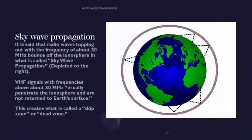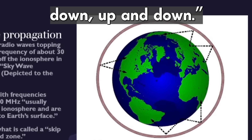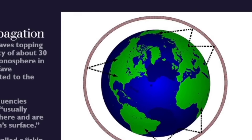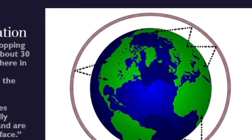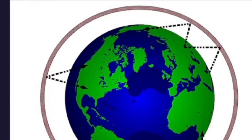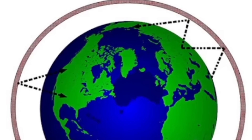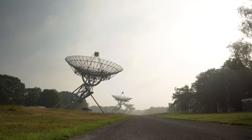This is where sky wave propagation comes in. On a globe, a horizontal signal would go toward space as the earth drops away; they claim it goes up, hits the ionosphere, bounces back down, reflects off the ground, goes back up, bounces down again, repeatedly. Radio waves topping out at around 30 MHz bounce off the ionosphere in what's called sky wave propagation. Very high frequency signals above about 30 MHz 'usually penetrate the ionosphere and are not returned to earth's surface.' This creates a skip zone or dead zone where signals can't be received. The ionosphere supposedly tops out at 40 MHz — if your signal is 40 MHz or below it reflects back; if it's 41 MHz or above, it goes straight through.